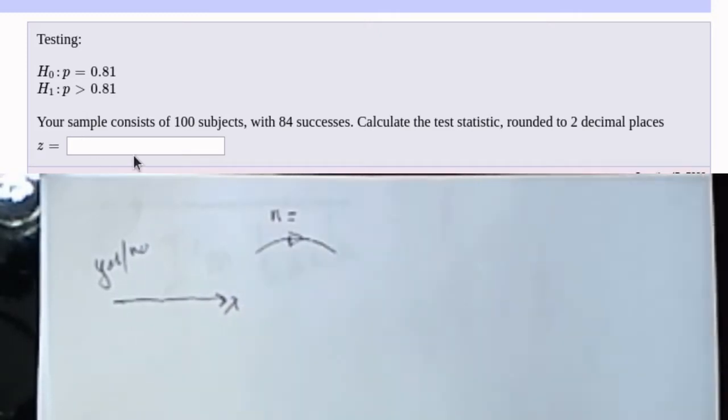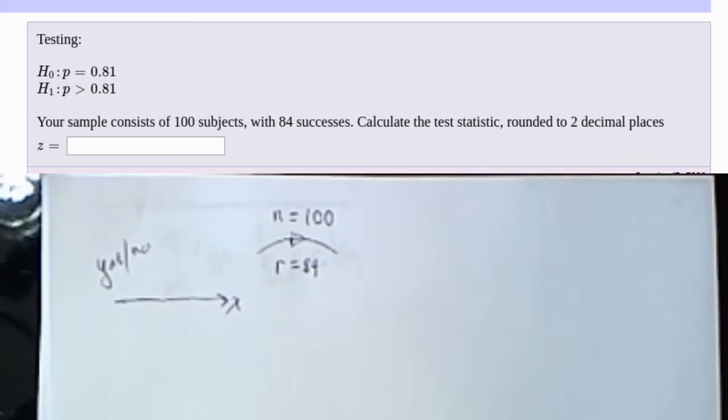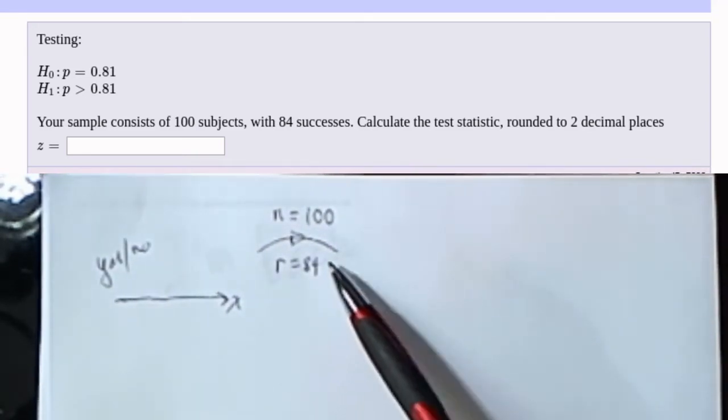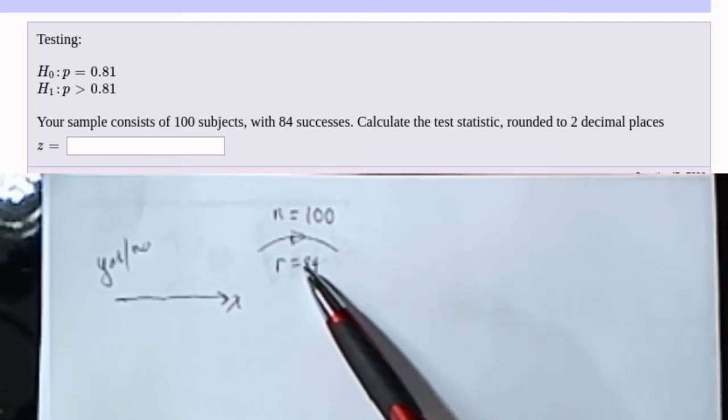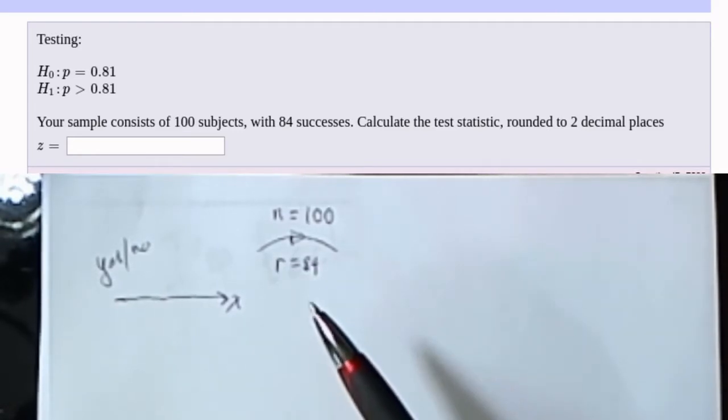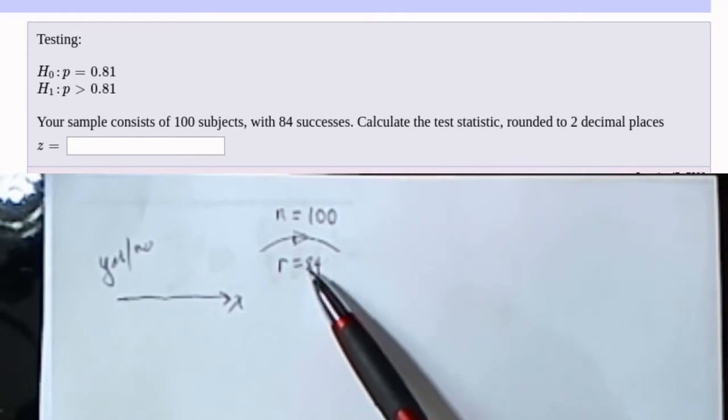The problem states that we look at a sample of 100 subjects. So that's our sample size. That's what n is going to be. Of that 100, 84 are successes, or 84 are saying yes. I'm going to use the variable r to represent the number of successes. I could have used s, except I'm using s to stand for the sample standard deviation.